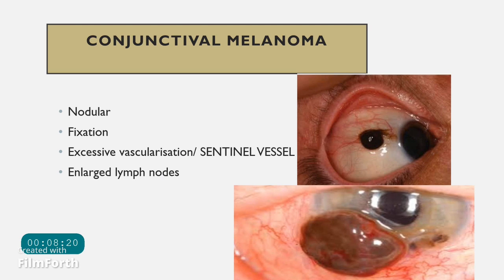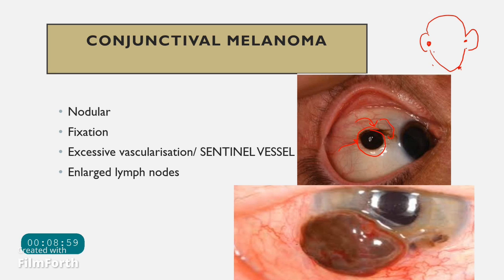Conjunctival melanoma is a malignant condition. It is typically nodular and fixed to the globe — there is no movement when you try to move it. Excessive vascularity is present due to the high metabolic rate of malignant cells, and a sentinel feeding vessel may be seen. Enlarged lymph nodes — pre-auricular, post-auricular, submandibular, and submental — can be present. Treatment includes both chemotherapy and surgical intervention.